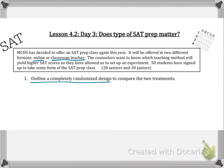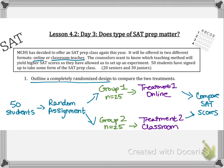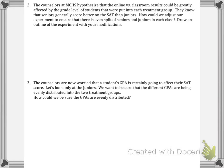We are going to outline a completely randomized design to compare the treatments. We take our 50 student volunteers and randomly assign them to one of two groups. Group one will have 25 students and group two will have 25 students. Treatment one is the online prep course, treatment two is the classroom prep course, and at the end we will compare their SAT scores.